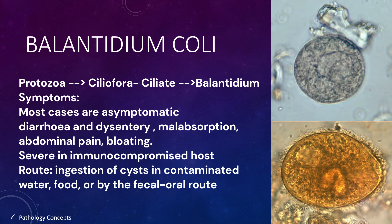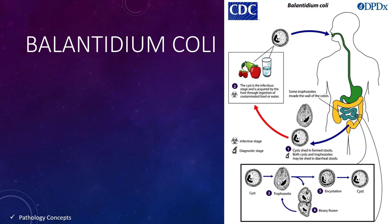The next organism is Balantidium coli. The sub-kingdom is Protozoa, Ciliophora (ciliate). The genus is Balantidium. Symptoms of infection are mostly asymptomatic, but diarrhea, dysentery, malabsorption, abdominal pain, and bloating are sometimes observed. Symptoms are severe in immunocompromised hosts. The route of infection is similar — ingestion of cysts in contaminated water and food. The life cycle of Balantidium coli is similar to that of Giardia and Entamoeba.